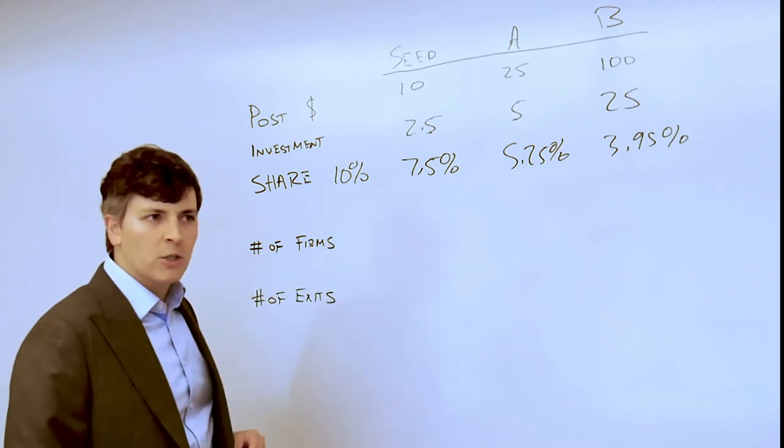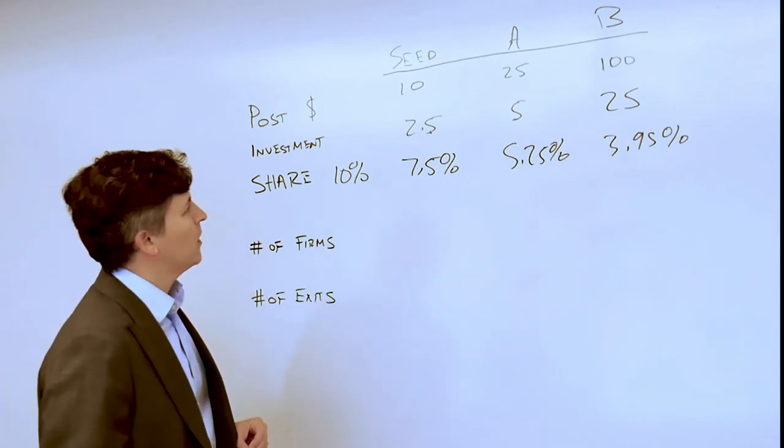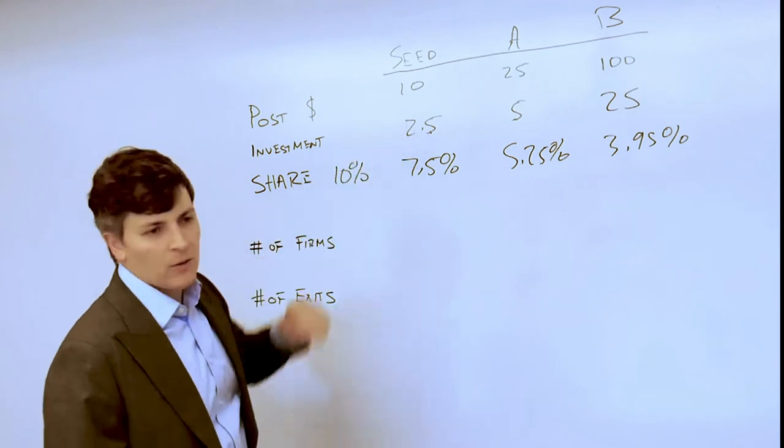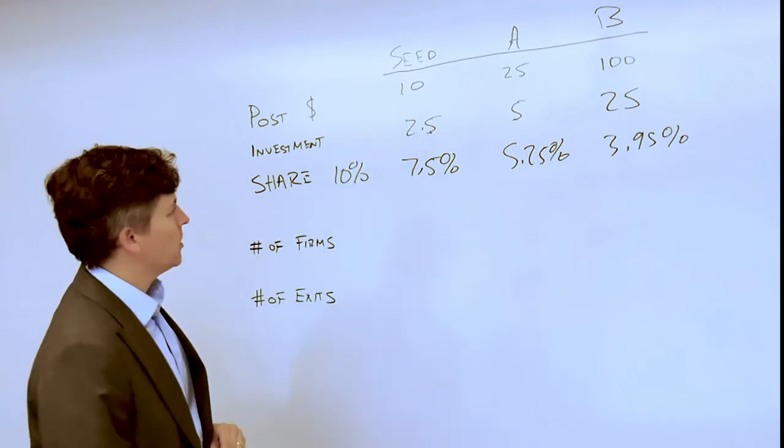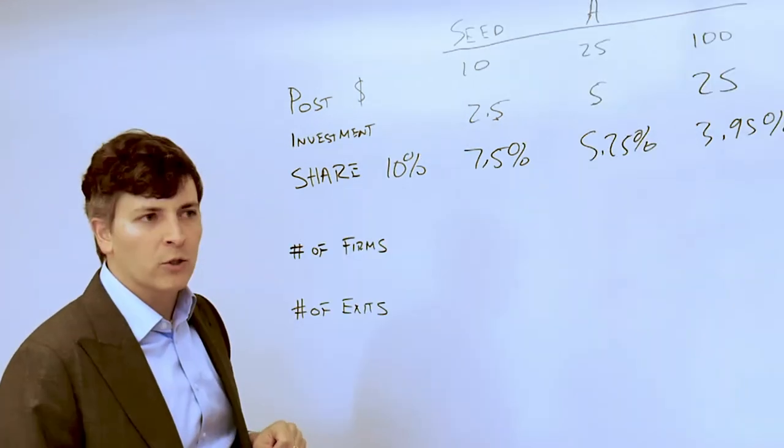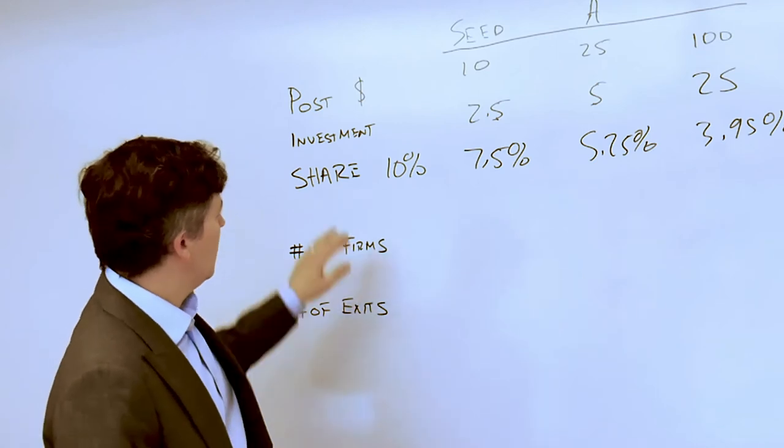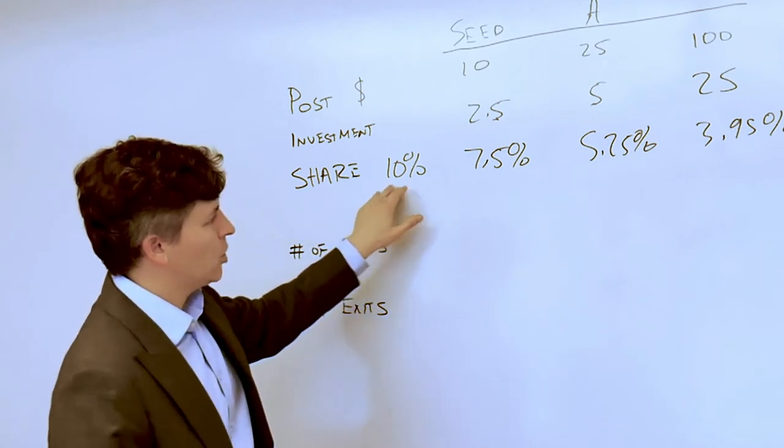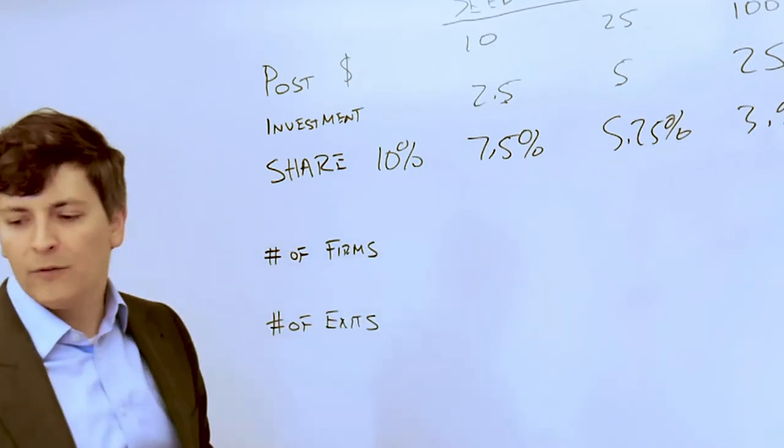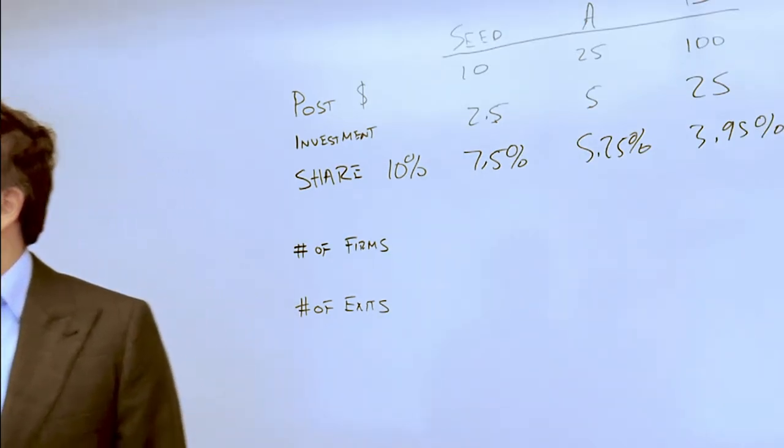This figure just walks you through three rounds of investment where in the seed round the post-money valuation is ten million dollars after a two and a half million dollar investment, which means that your original ten percent share is now only seven point five percent of the total outstanding equity in the firm.